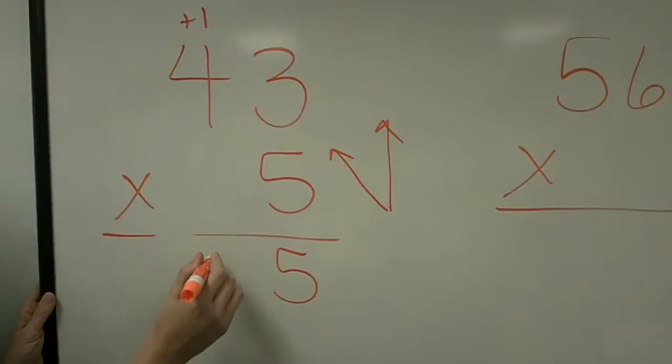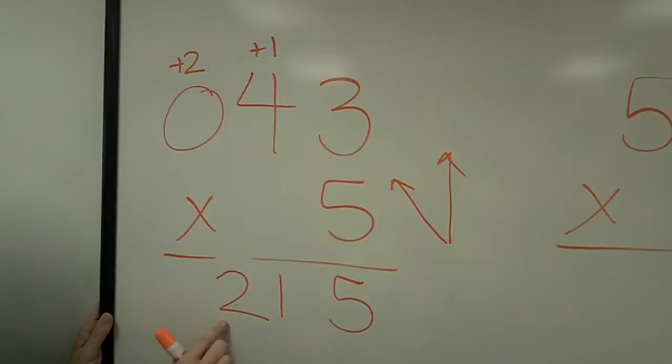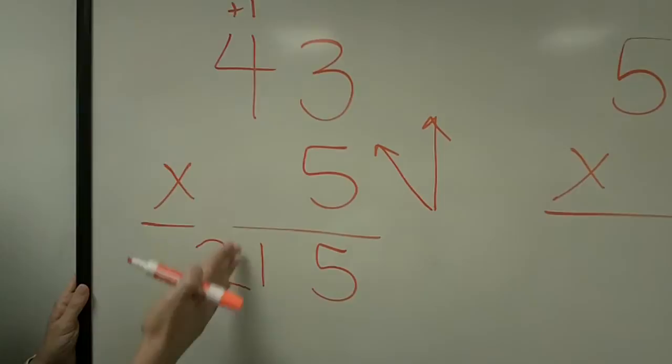But there's no digit here, so it is actually a 0. So watch. 5 times 0 is 0, plus 2 is 2. 215, we get the same answer. What happens is, because we know that 0 is there, we know that we can automatically bring it down, and we don't have to do one more step.